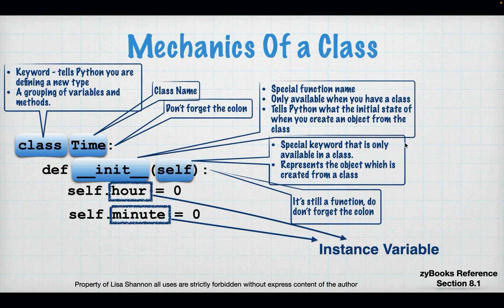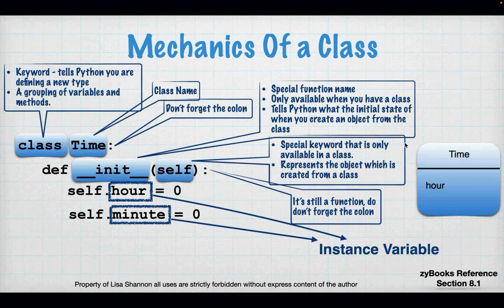So basically this says: Python, I have a class called time. In that class, when you create it, you're going to create it with two variables — hour and minute — and each and every object I create is going to get its own hour and its own minute. Here is my class definition: I have time, hour, and minute — that's my class definition.